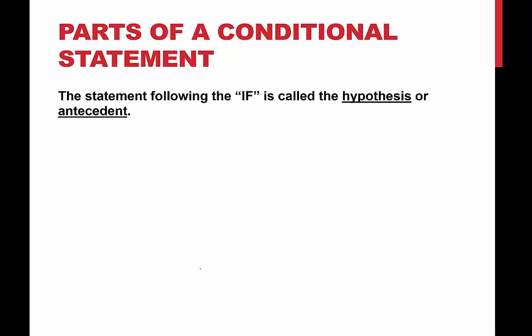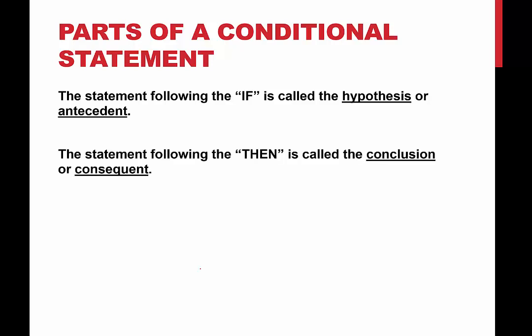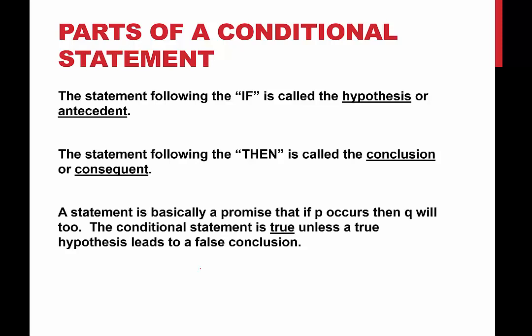Now let's talk about the parts of a conditional statement. The part that comes after 'if' is called the hypothesis or the antecedent — I generally use hypothesis, but they are synonyms. The statement that follows 'then' is called the conclusion or the consequent. Normally we say hypothesis and conclusion together, or antecedent and consequent together. A conditional statement is basically a promise that if P occurs then Q will too.